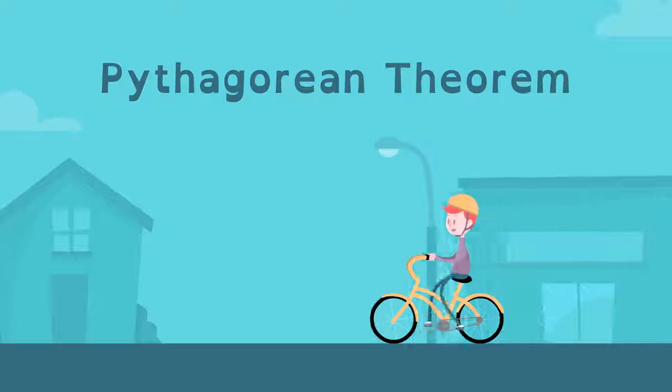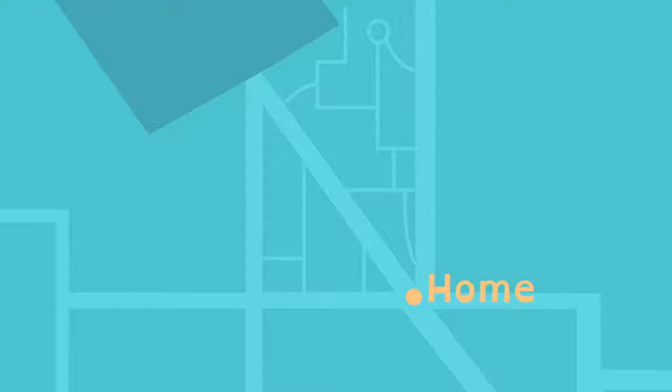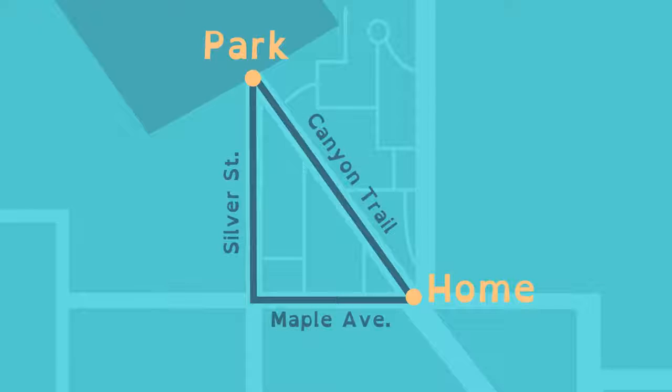The Pythagorean Theorem helps people solve real-world problems. Lucy usually bikes to the park along Maple Avenue, then up Silver Street. Is Canyon Trail shorter?